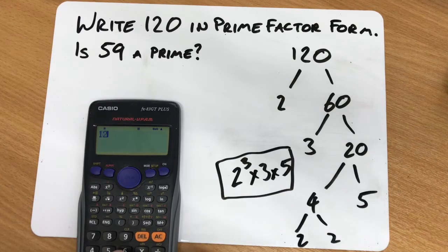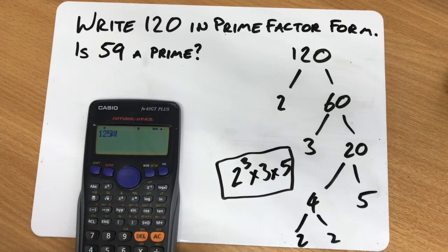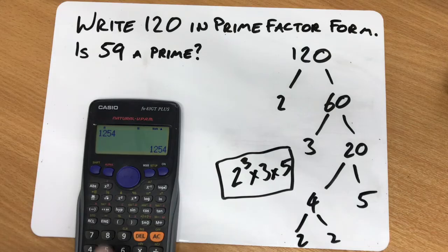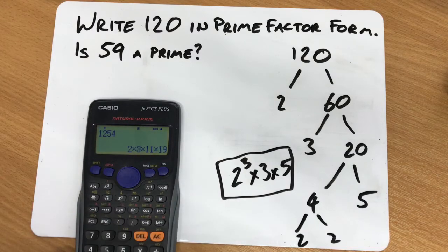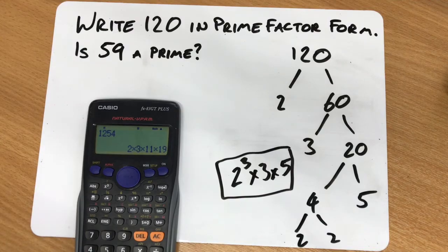And of course we can do this with any sort of number that we want — simply press equals and then factorize it and it will split it quite quickly for you. And there you go, how to do it very quickly on your calculator.